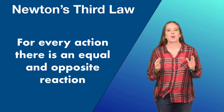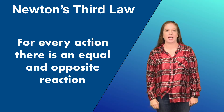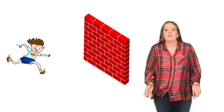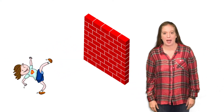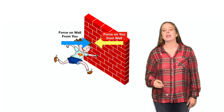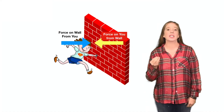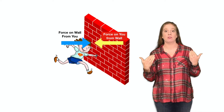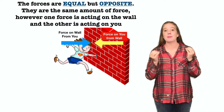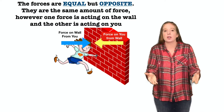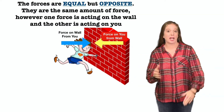Newton's Third Law says that for every action there is an equal and opposite reaction. Have you ever accidentally bumped into a wall or door only to find yourself falling backwards? This is because while you are exerting a force on the wall, the wall is exerting a force back on you. The forces are equal but opposite — the same amount of force, however one force is acting on the wall and the other force is acting on you.